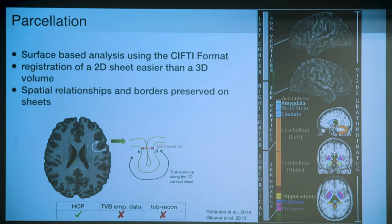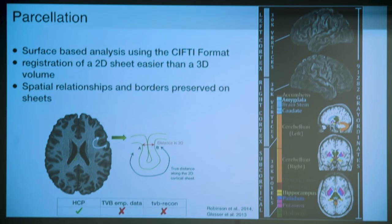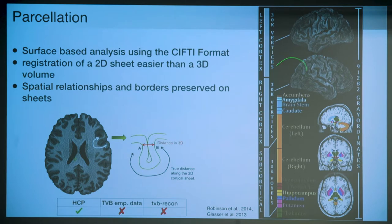The file format for this is not NIfTI (a volume representation) nor GIfTI (just a surface), but a combination of both called CIFTI, where elements are called grayordinates. It contains both a surface and a volumetric representation of the brain in one file. The cortical sheet - left and right hemisphere - is represented by around 30,000 vertices each, and there are another 30,000 grayordinates for subcortical areas. The HCP uses CIFTI for all their registration, parcellation, and fMRI processing.